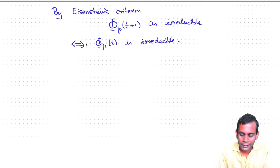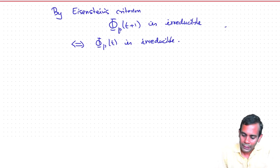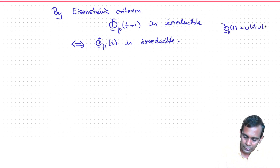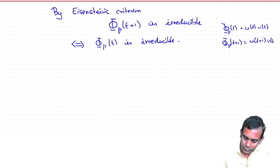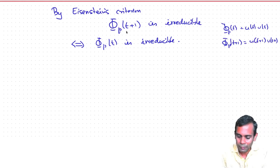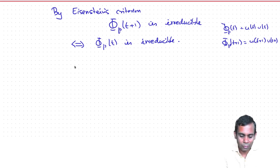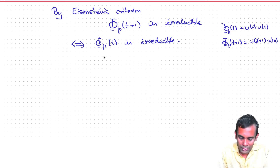This is equivalent to saying φ_p(t) is irreducible. If you had a factorization φ_p(t) = u(t)·v(t), then φ_p(t + 1) = u(t + 1)·v(t + 1), and you can reverse this by substituting t − 1. So the irreducibility of the two polynomials is equivalent, and we conclude that φ_p(t) is irreducible.